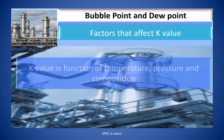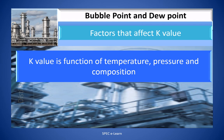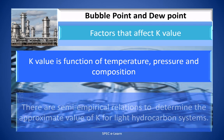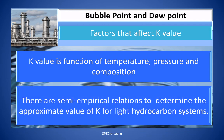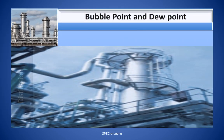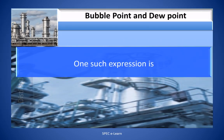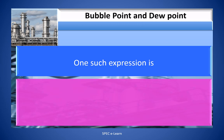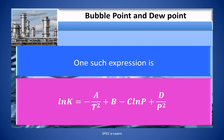K value is a function of temperature, pressure, and composition. There are semi-empirical relations to determine the value of approximate K for light hydrocarbon systems. One such expression is: ln K equal to minus a divided by T squared, plus b, minus c times ln of P, plus d divided by P squared.